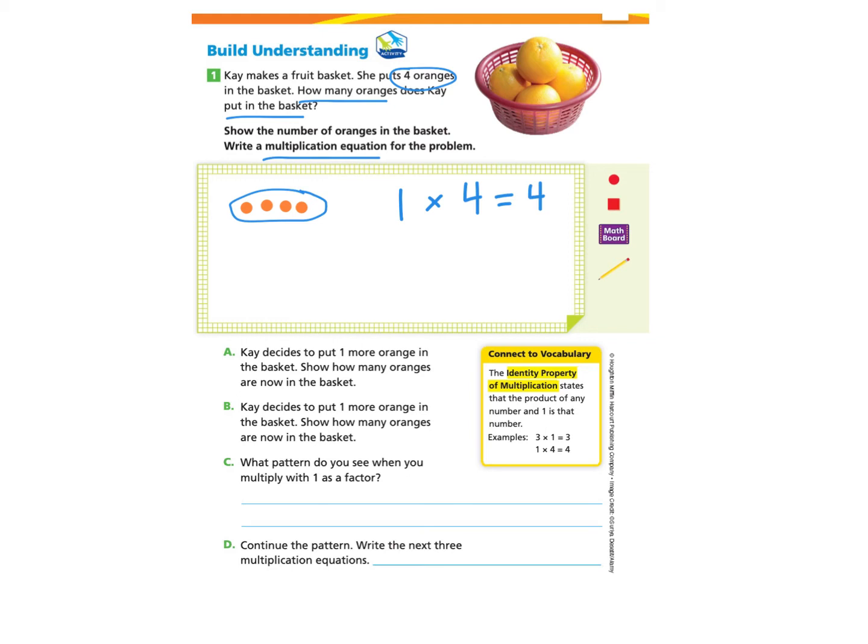Let's take a look at Part A. K decides to put 1 more orange in the basket. Show how many oranges are now in the basket. So we're going to create a new basket and now we're going to add 1 more, which would be 5. This creates a new multiplication equation. There's 1 basket, but now there are 5 oranges, which makes a total of 5 oranges.